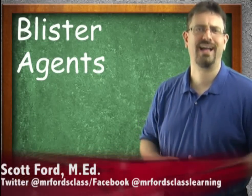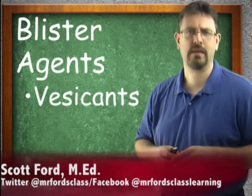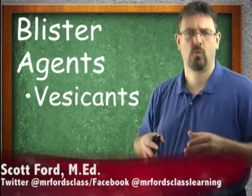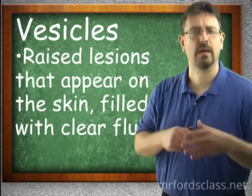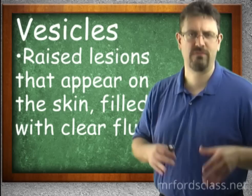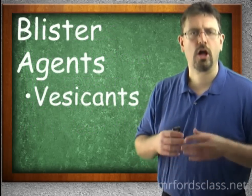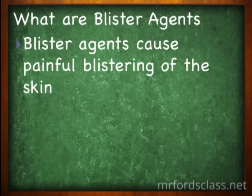Blistering agents, one of our five categories. These are also known as vesicants. A quick tie-in back to the medical world: a vesicle is a raised lesion — basically a boo-boo — that appears on the skin and can be filled with clear fluids. So vesicants are going to cause blisters, thus the name blistering agent. Blistering agents cause painful blistering of the skin.